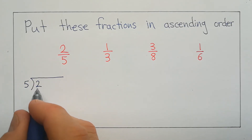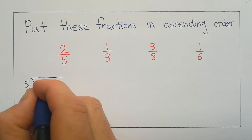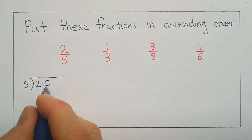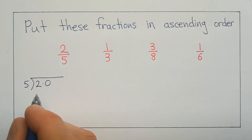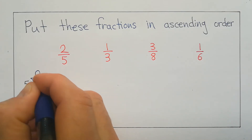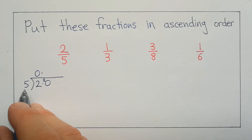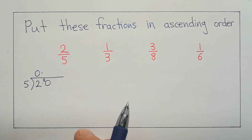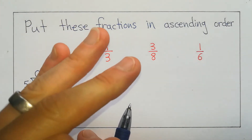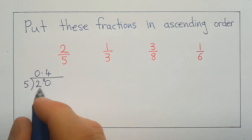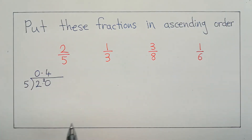Now 5 doesn't go into 2, so, a bit like we saw before, I'm going to put a 0 here. We'll just do one 0 for now and see if we need any more. So 5 doesn't go into 2, so we put a 0 and carry over the 2. How many times does 5 go into 20? 5, 10, 15, 20 — that's 4 times. So 0.4 is equal to 2 fifths.